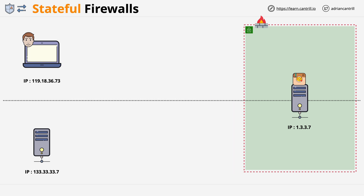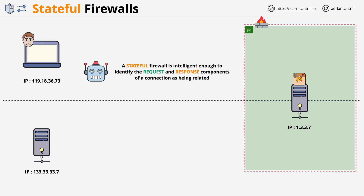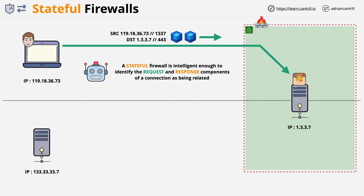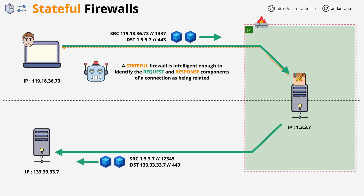Using the same architecture — Bob's laptop on the top left, the catagram server on the middle right, and the software update server on the bottom left — a stateful firewall is intelligent enough to identify the response for a given request. Since the ports and IPs are the same, it can link one to the other. For a specific request to catagram from Bob's laptop, the firewall automatically knows which data is the response, and the same is true for software updates.